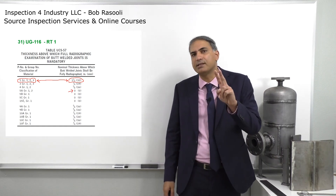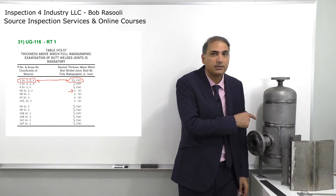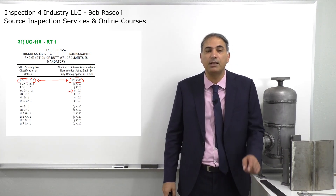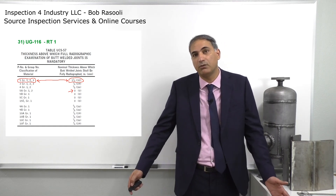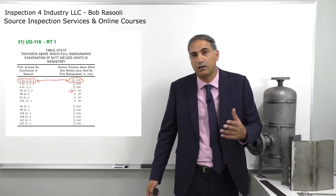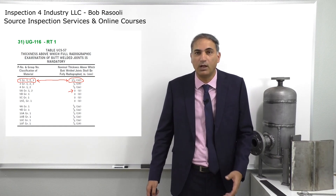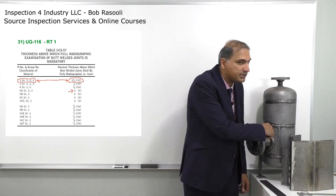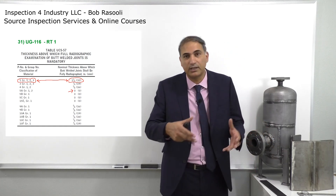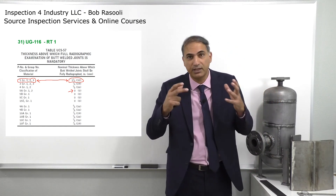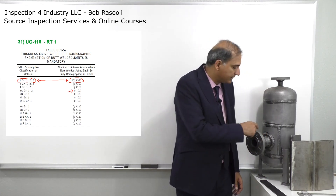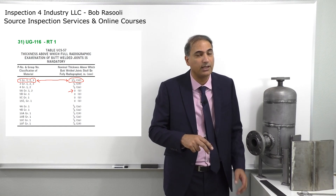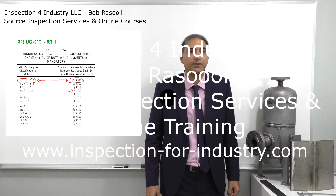To summarize: full radiography is required for two reasons — either your service fluid is toxic/lethal, or your wall thickness exceeds the value indicated in table UCS-57. When full radiography is performed, joint efficiency E=1 must be used in the design formula. The exception for both cases is nozzles and communicating chambers: if the nozzle diameter is less than 10 inches and wall thickness is less than 1-1/8 inch, it is exempt from radiography testing.